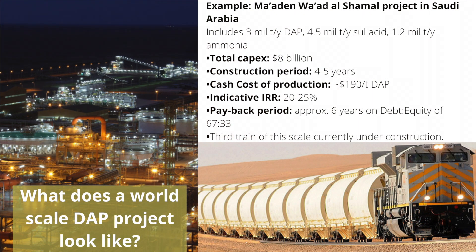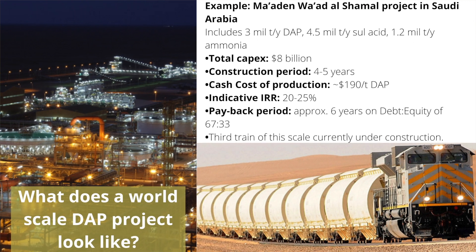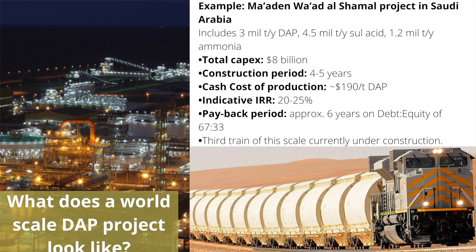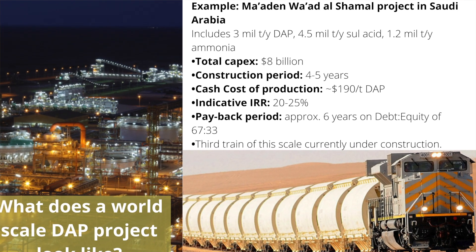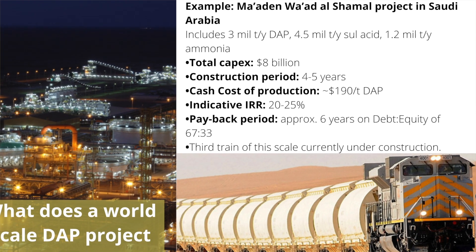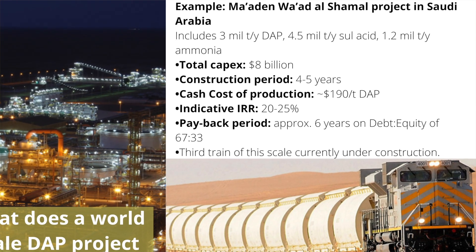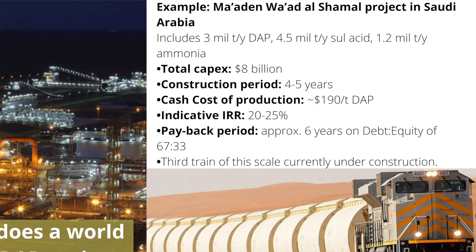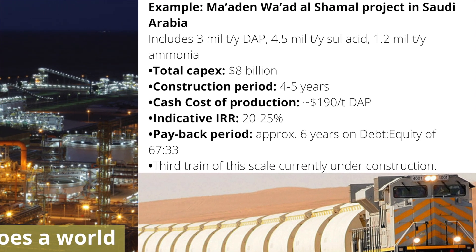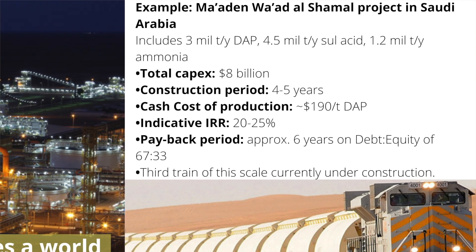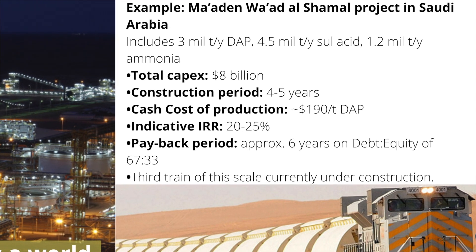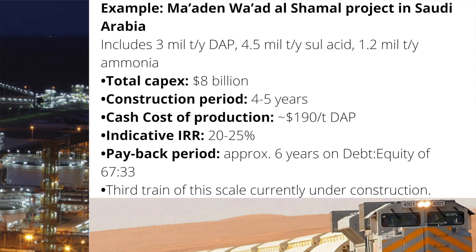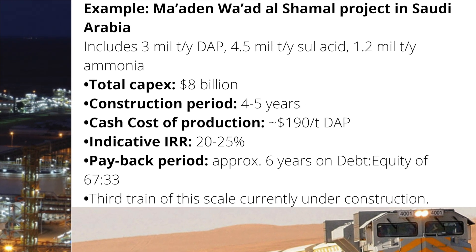Looking at the project in more detail, we see that it has around 1.2 million tons of ammonia, which is a very substantial ammonia plant, 4.5 million tons of sulfuric acid, and ultimately produces 3 million tons of DAP and/or MAP. The capital cost of this project was around $8 billion, which includes the rock beneficiation plant. Construction took around five years. The cash cost of production is around $200, which is well below the DAP price in Q3 2021 of $600.